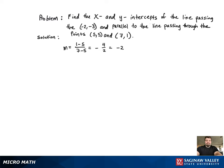Now what we're going to do is use that slope along with the point negative 2, negative 3 to find the equation of our line. We're going to start with the general equation in slope-intercept form and plug in our slope that we just solved for. Now we just need to solve for b, so we're going to use the point negative 2, negative 3 to find b.